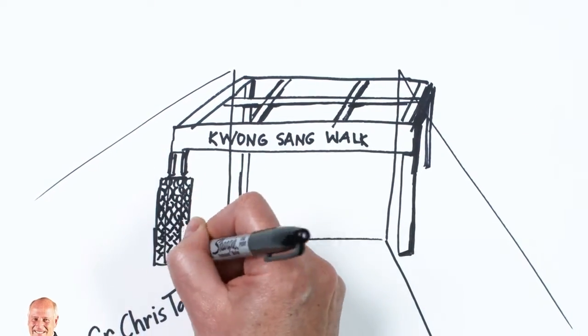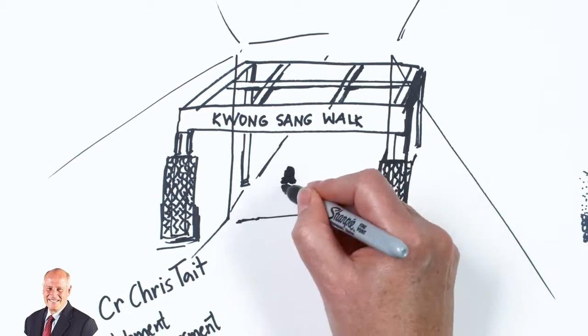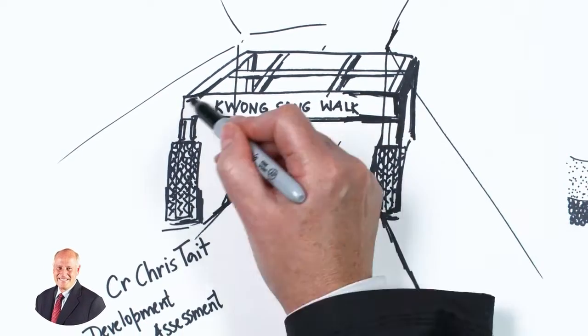Kwong Sang Walk in Ruthven Street will also be completed with $50,000 allocated to finish in line with the City Centre Master Plan and this document continues to be an important influence in shaping our CBD.